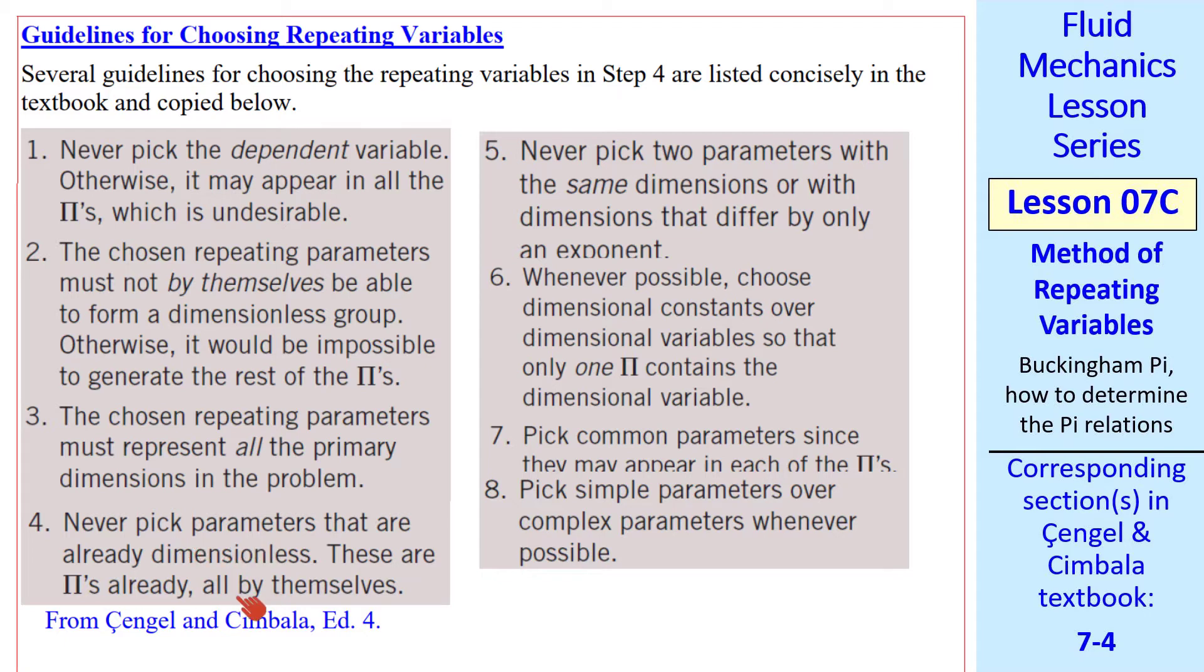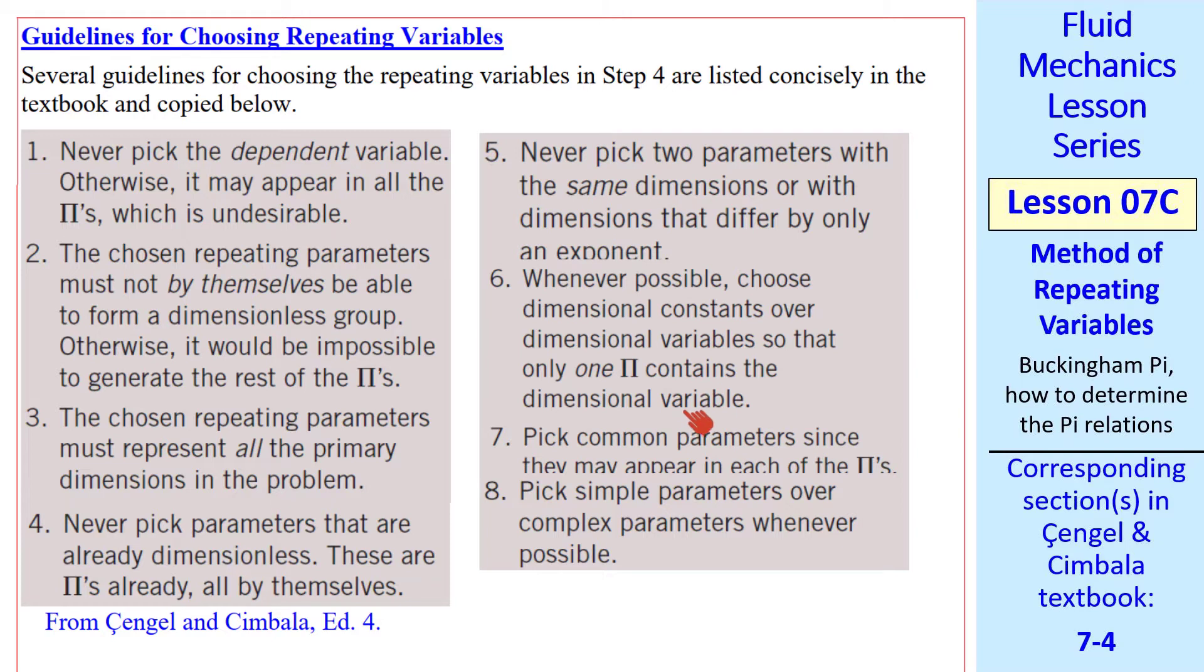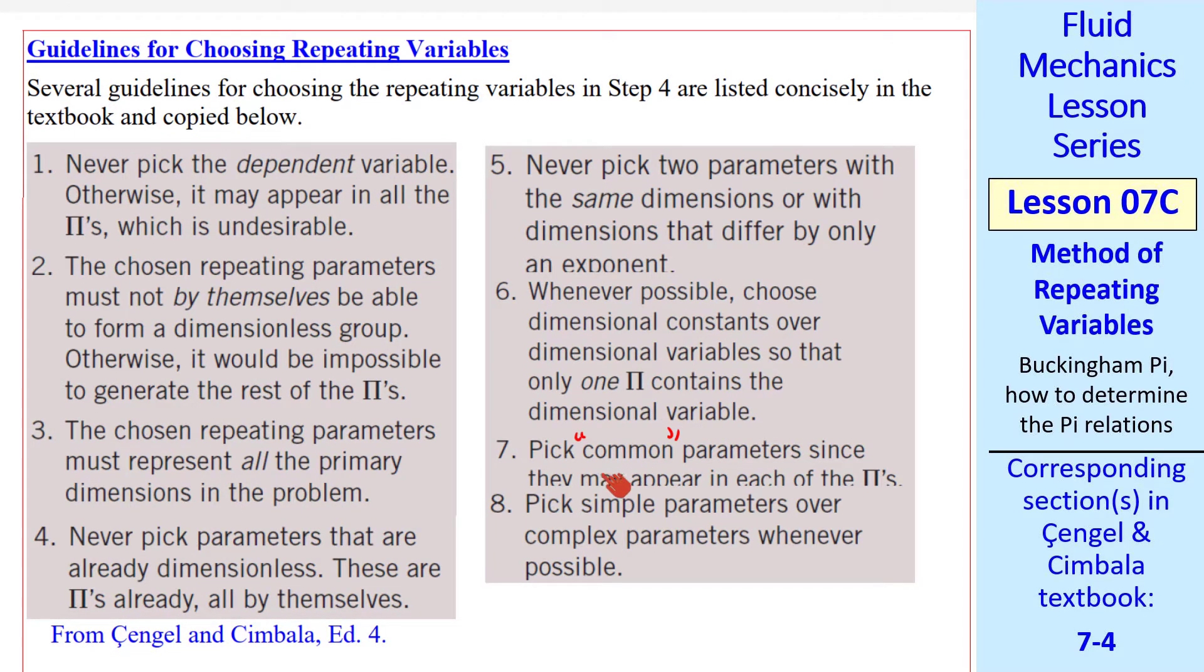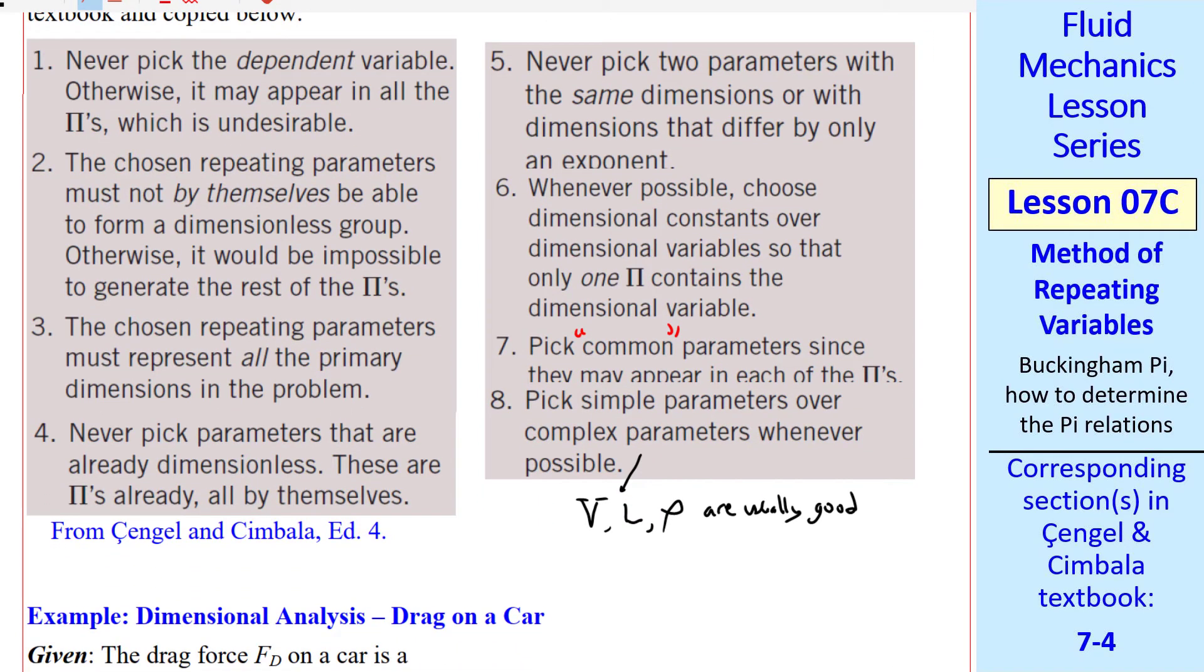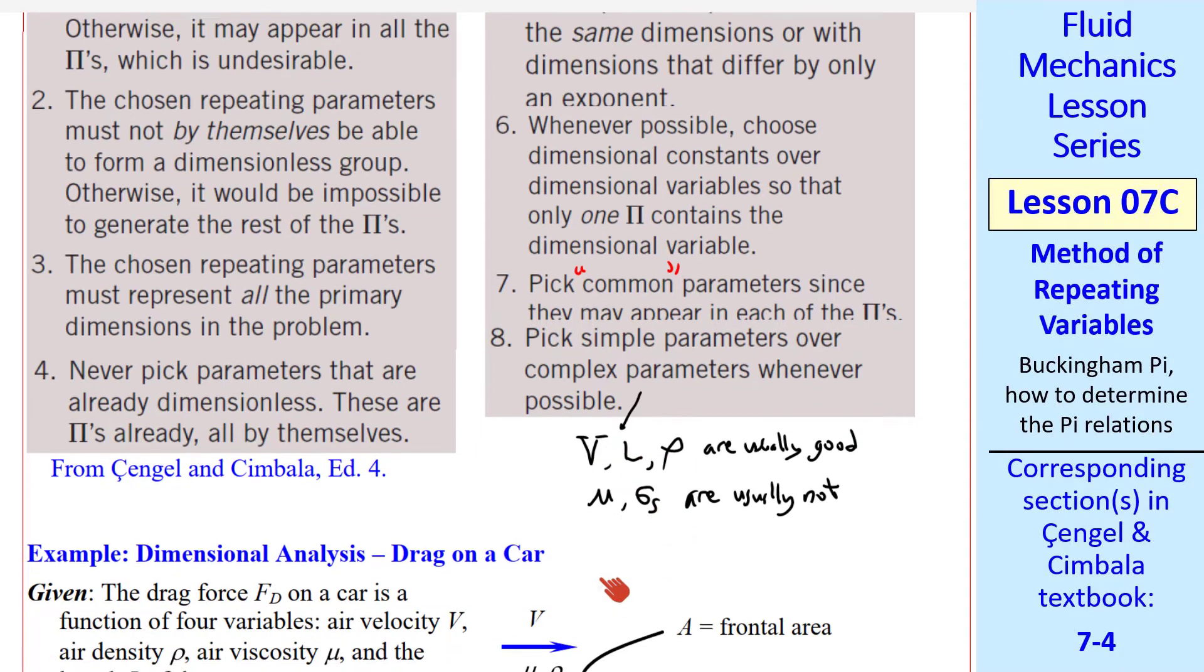Never pick two parameters with the same dimensions or with dimensions that differ by only an exponent. For example, don't pick a length and an area. Whenever possible, choose constants rather than variables so that only one pi contains the variable. As an example, it's better to have g, gravitational acceleration, as a repeating variable than to have some other variable acceleration in the problem. Pick common parameters since they have the potential of appearing in each of the pis. And finally, pick simple parameters over complex ones whenever possible. Some speed, some length, density, are usually good choices. Viscosity or surface tension are usually not. I generally would not want mu to appear in all my pis. I'd rather have one pi with the mu in it and one pi with the sigma s in it.